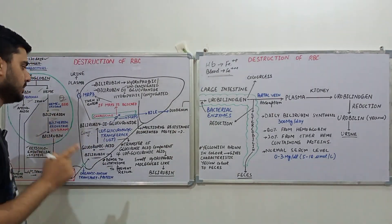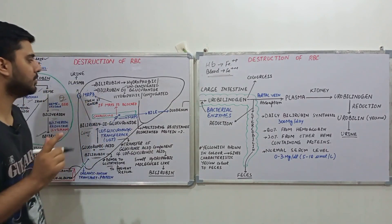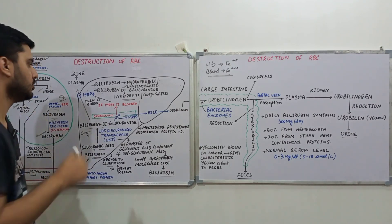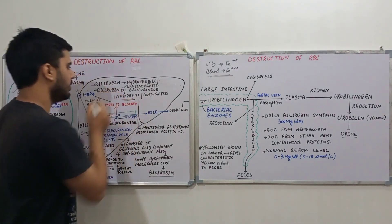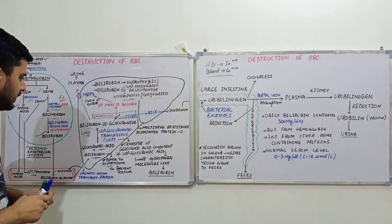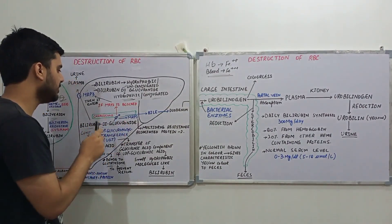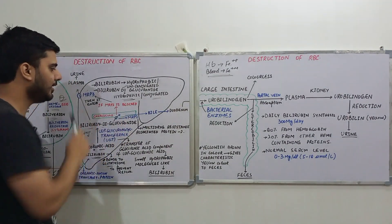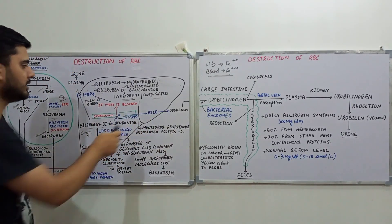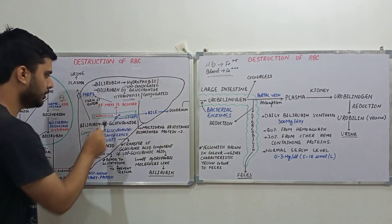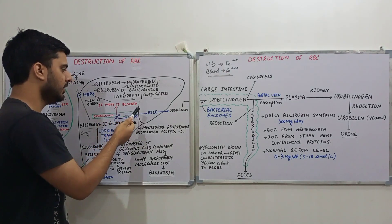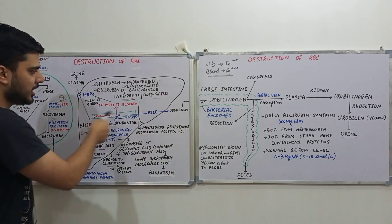After conjugation, we have bilirubin diglucuronide, which is hydrophilic and can therefore travel through the fluid medium on its own. This is now conjugated bilirubin. Bilirubin diglucuronide is then transported into the bile canaliculi by an important protein called multidrug resistance-associated protein 2, or MRP2.